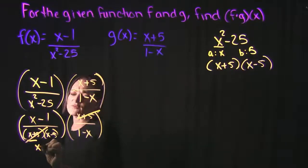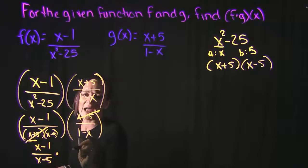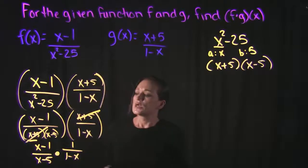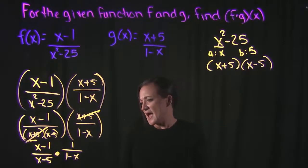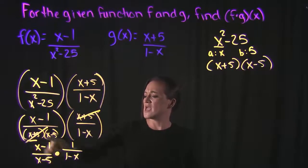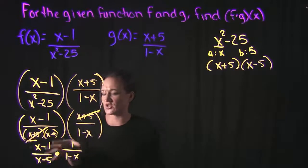And if we do that, we're left with x minus 1 over x minus 5 times 1 over 1 minus x. So we need to take a look and see if there's anything else that can be canceled or simplified. Taking a look at this problem, though, I do see I have an x minus 1 here and a 1 minus x. These look very, very similar to each other.